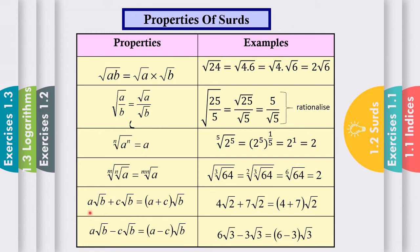Property 5: if you have A surd B plus C surd B, you can factorize out surd B and then add A plus C. For example, 4 surd 2 plus 7 surd 2 — factorize surd 2, and 4 plus 7 equals 11 — giving 11 surd 2.